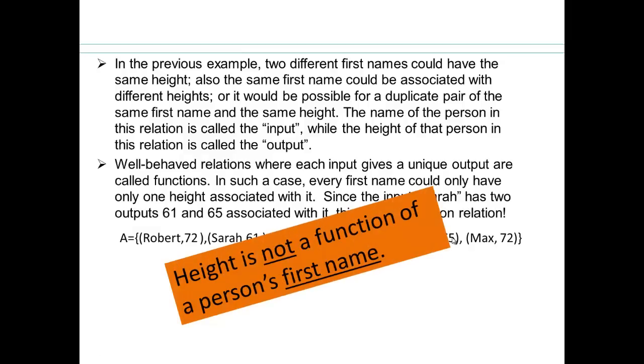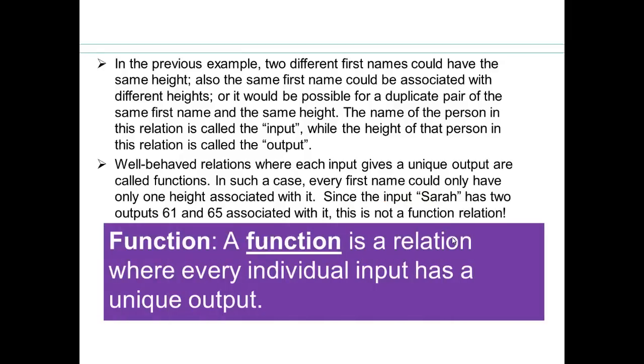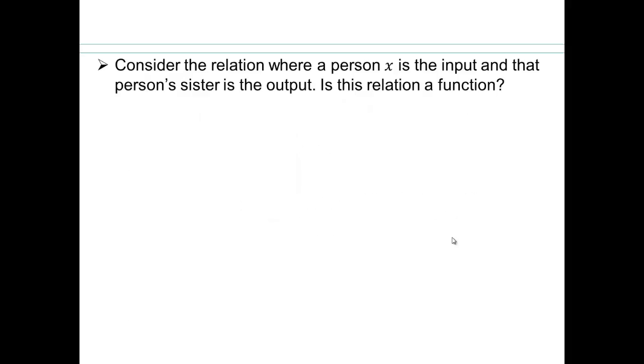Height is not a function of a person's first name. And that's because two people with the same first name can have different heights. So a function is a relation where every individual input has a unique output. Remember that. Every individual input has a unique output.